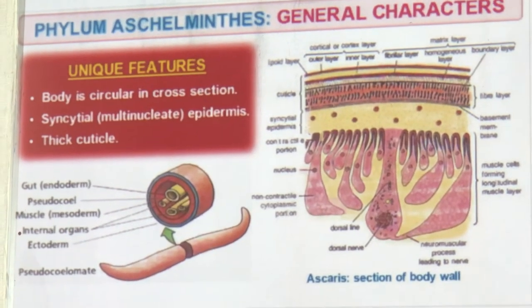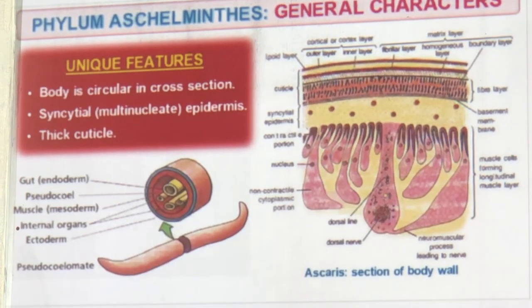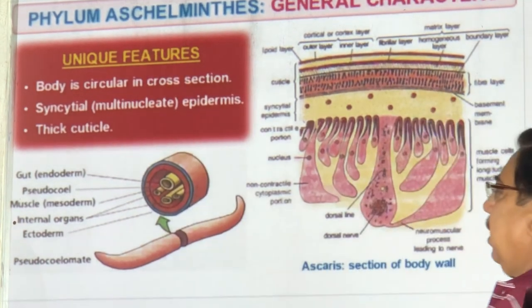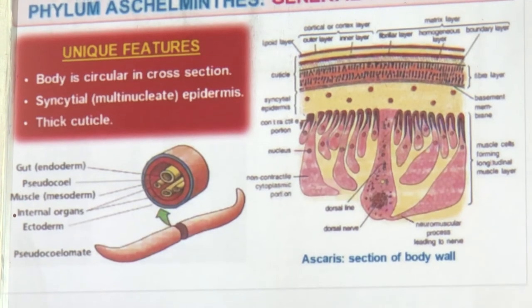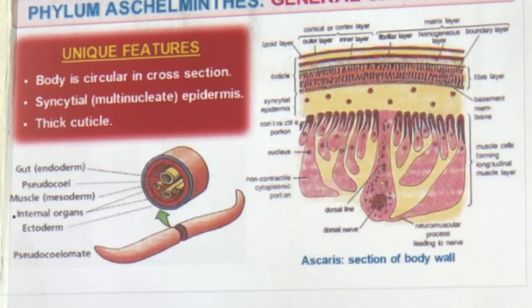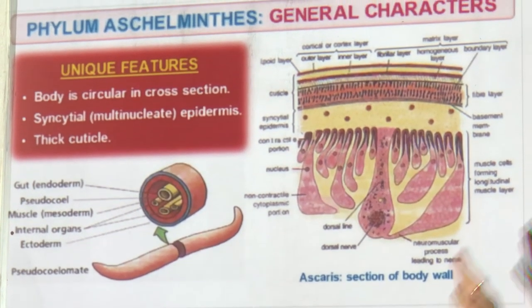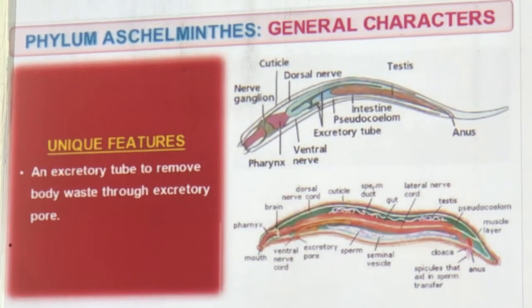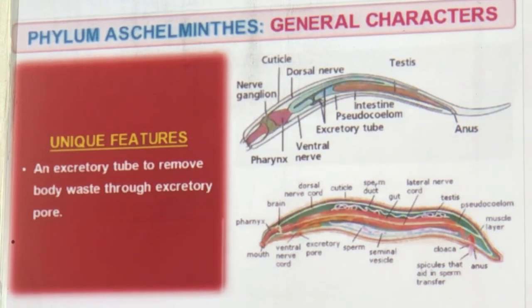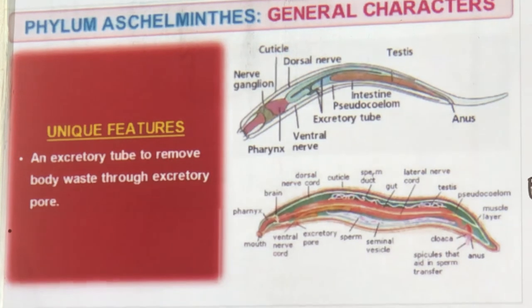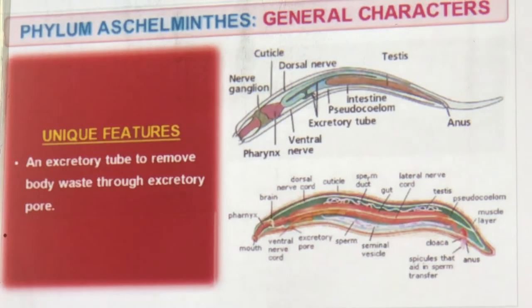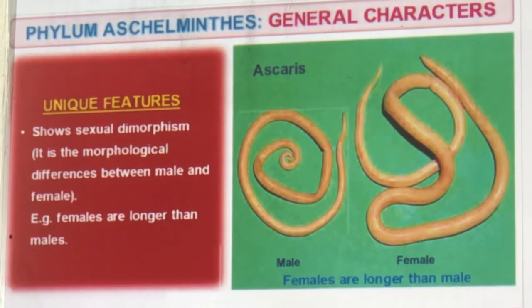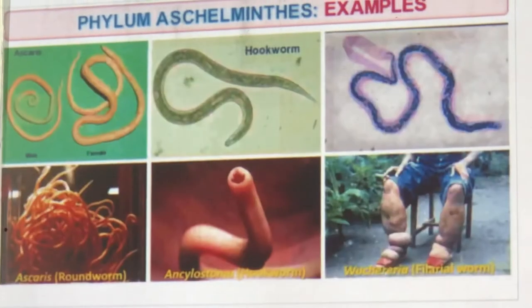What is unique about Aschelminthes? First: the epidermis is syncytial — multinucleate, meaning many nuclei are seen in the epidermis without cell division. Second: a thick cuticle on top so it is not digested by the host body — like nail polish, a thick protective cover. An excretory tube throws out waste through an excretory pore — so the excretory system is developing. Male and female look different (sexual dimorphism).